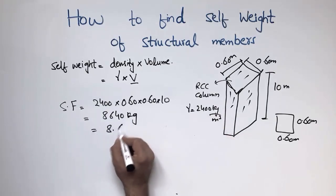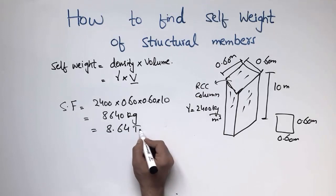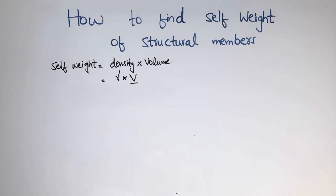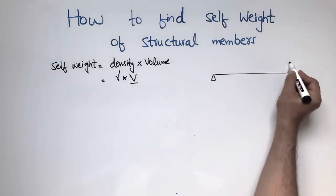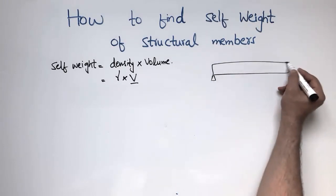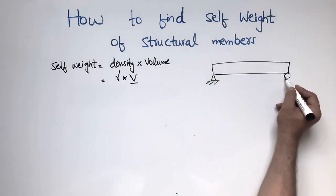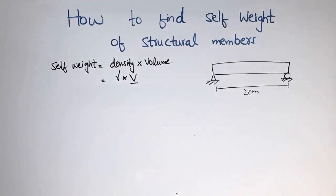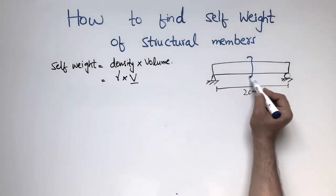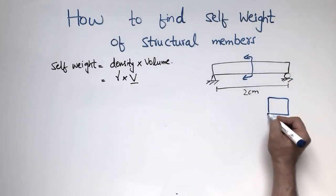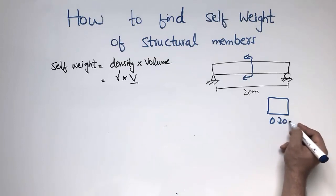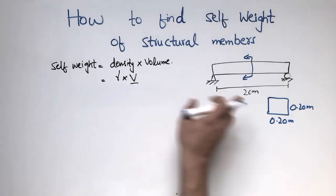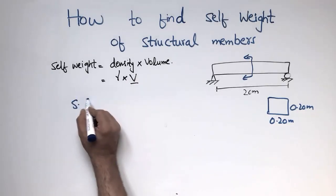That comes out to 8.64 tonnes as the self-weight of this column. Now we want to find the self-weight of a beam. Let's consider a simply supported beam with a length of 20 meters. The cross-section of this beam is square: 0.2 meters wide and 0.2 meters in height. We want to find the self-weight for this beam.